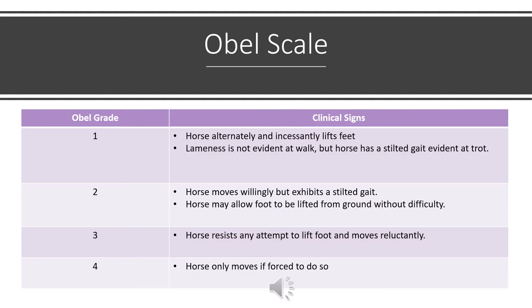The Obel scale is a grading system used to classify and understand laminitis progression in horses. It is extremely useful for veterinarians during diagnosis and treatment because laminitis is a complex disease. Grade 1: the horse alternately and incessantly lifts its feet; lameness may not be evident at a walk but a stilted gait is evident at trot. Grade 2: the horse moves willingly but with a stilted gait and may allow the foot to be lifted without difficulty. Grade 3: the horse resists any attempt to lift the foot and moves very reluctantly. Grade 4: the horse will only move if forced.